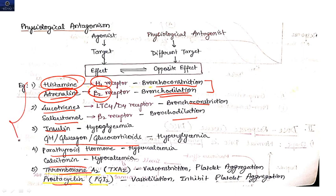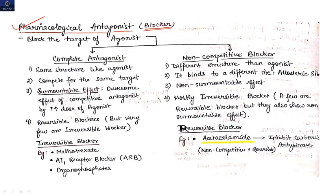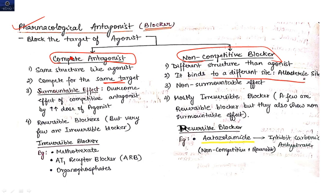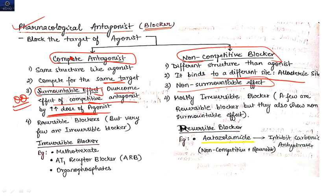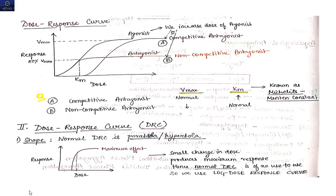Pharmacological antagonists are divided into two groups: competitive antagonist and non-competitive antagonist. In competitive antagonism, the antagonist binds to the same site as the agonist. Its effect is surmountable — you can overcome it by increasing the dose of the agonist. In non-competitive antagonism, the antagonist binds to a different site and the effect is non-surmountable, making it difficult to overcome. Non-competitive antagonists are mostly irreversible blockers.